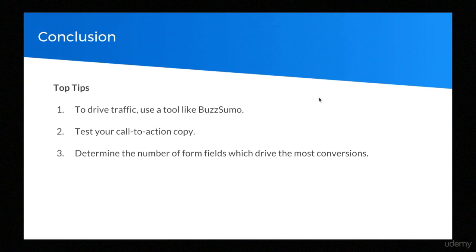Buzzsumo also enables you to see who shared your competitors' posts. So if you see a high traffic article by your competitor, you know exactly who shared that article. Reach out to the people who shared it and ask them for their thoughts about your superior post — in an email saying something like, 'I saw that you shared a competitor's article. I've created something that I think is even better. I would love your thoughts on it.'